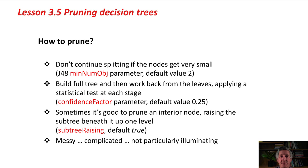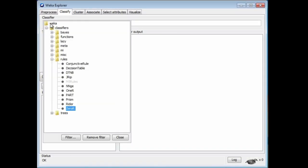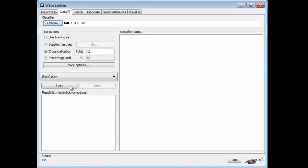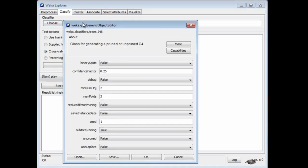How do we prune? There are simple and more complicated techniques for pruning. A very simple technique is not to continue splitting if the nodes get very small. In the last lesson we said we keep splitting until each node has just one class, but it's probably not worth splitting a very small node with a couple of instances. That's actually a parameter in J48 called minNumObj — the minimum number of instances per leaf. The default value for that is 2.